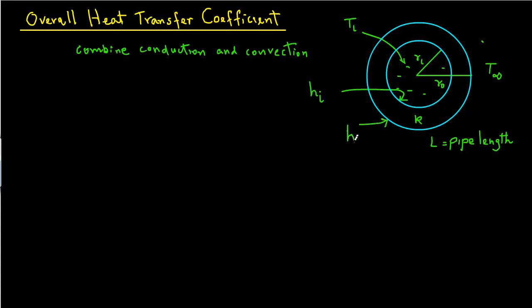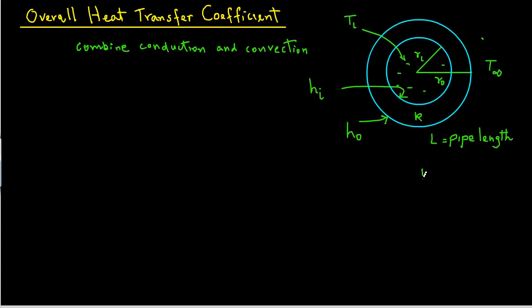So if we draw a temperature profile, we will start from the inside temperature. Let's consider that to be our higher temperature than outside. So there is some bulk temperature and that drops to right at the surface of the pipe. Then if the pipe is highly conductive, there is very little temperature gradient inside the pipe. And then there is again a temperature drop to T infinity.